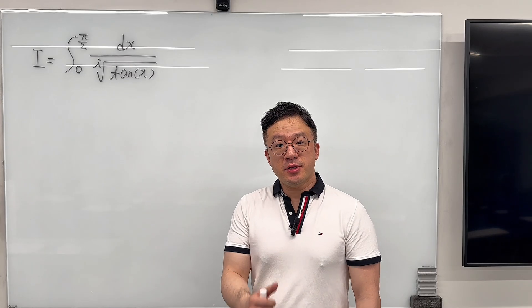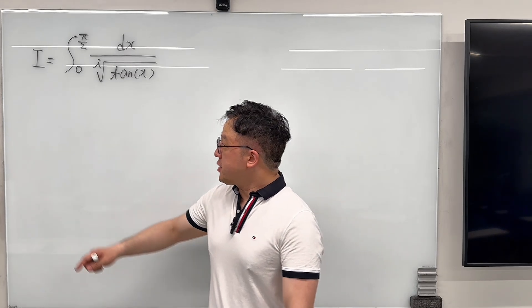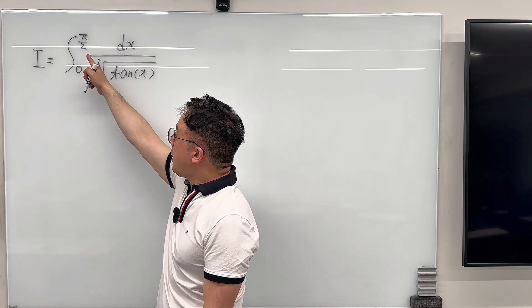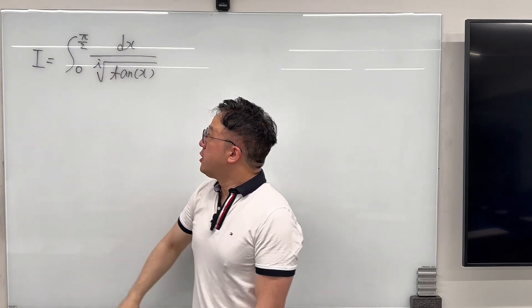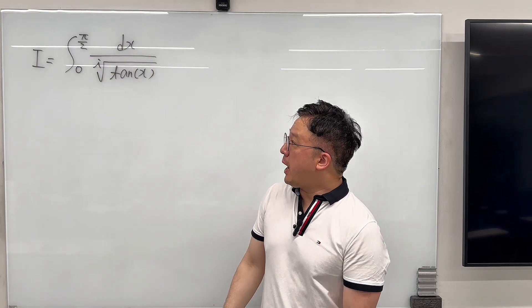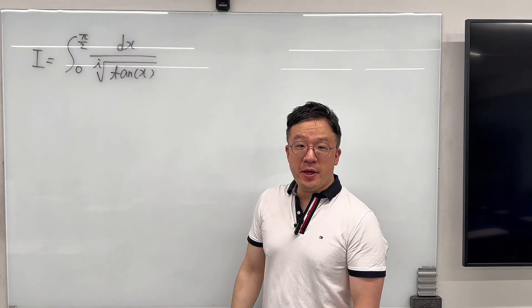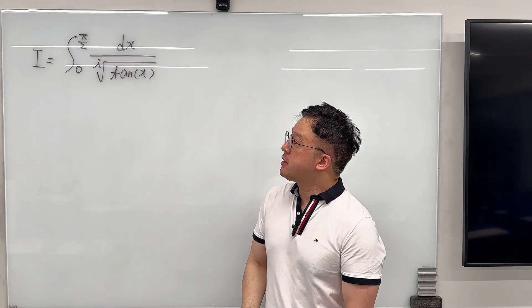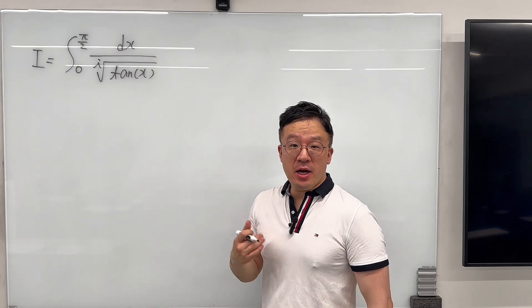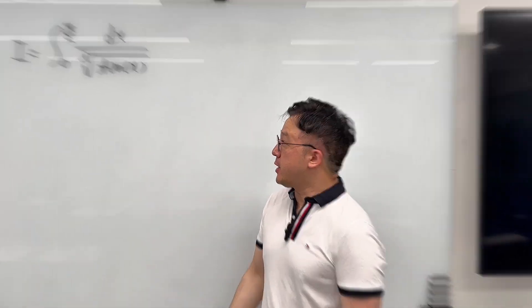Okay, here's the question. We need to evaluate the integral from zero to pi over two of dx over the i-th root of tangent of x. We'll be using the beta function to evaluate this.